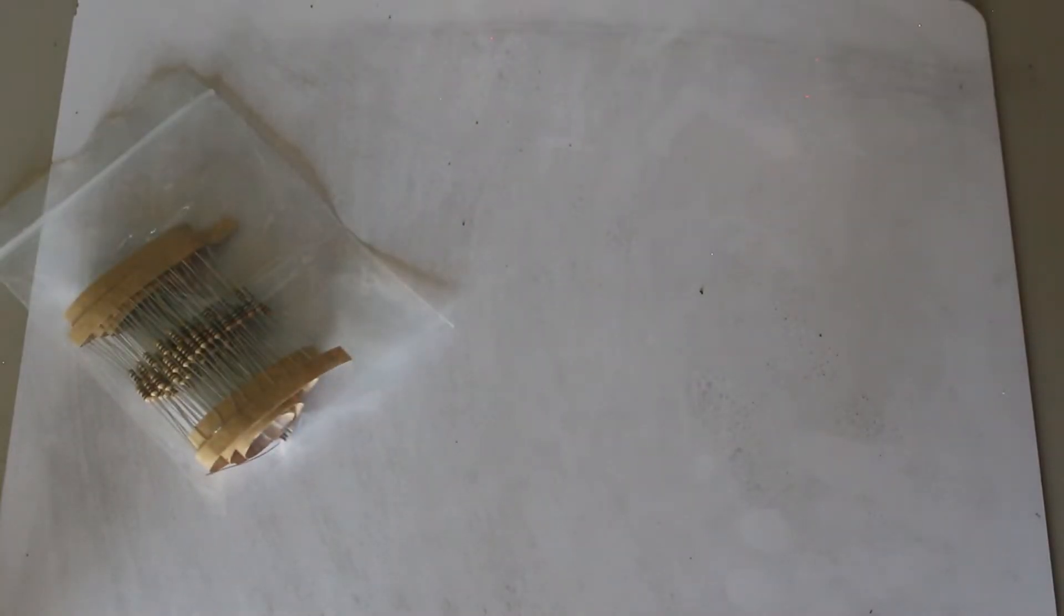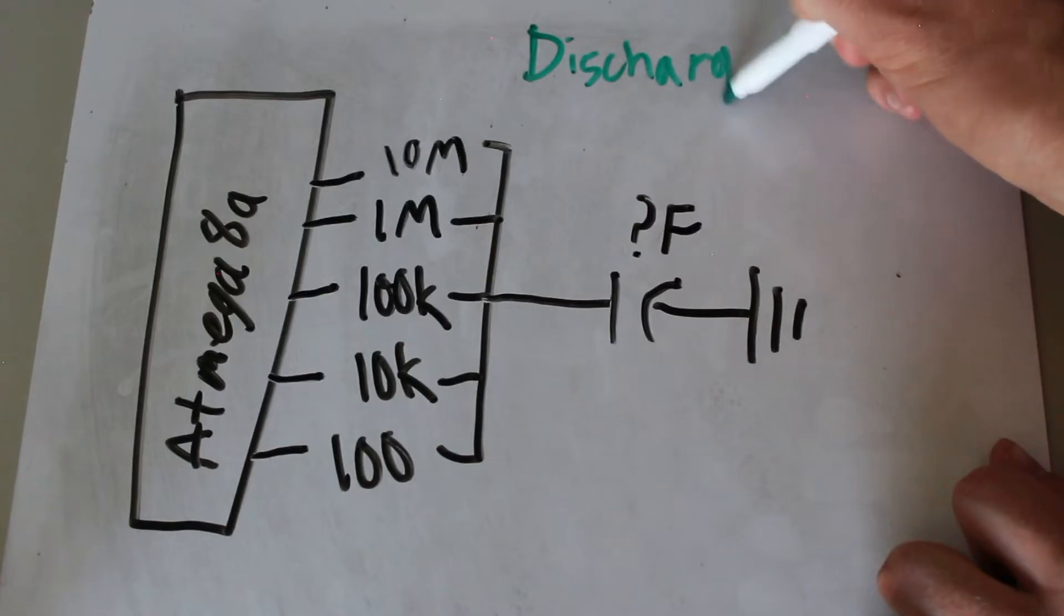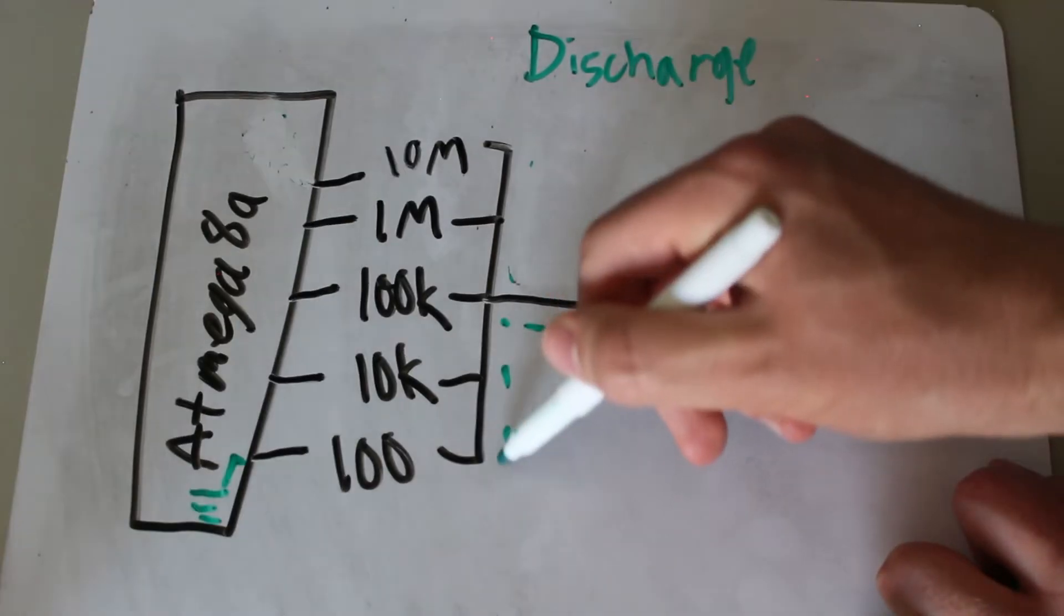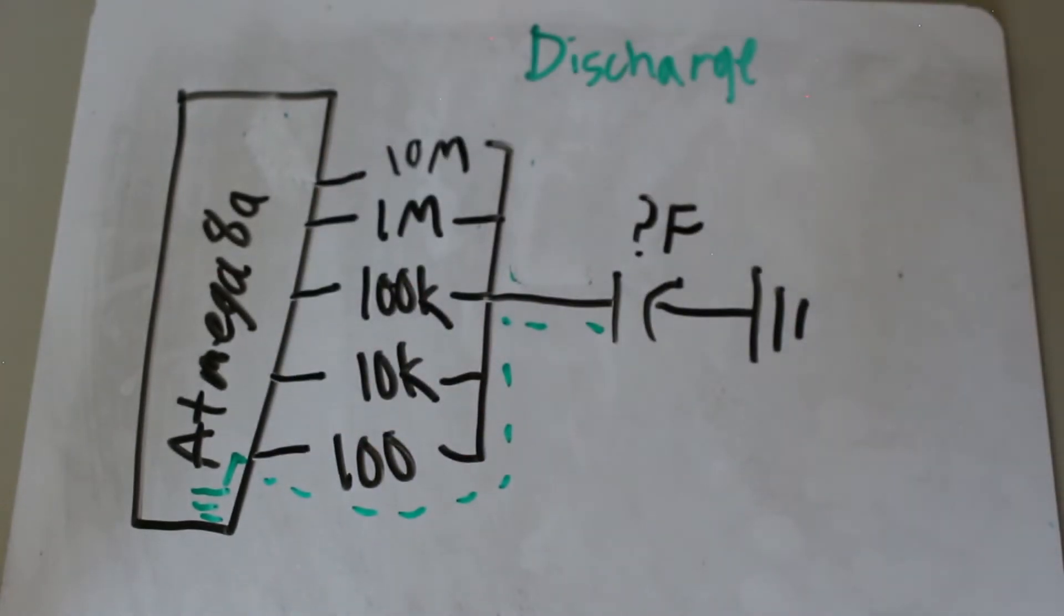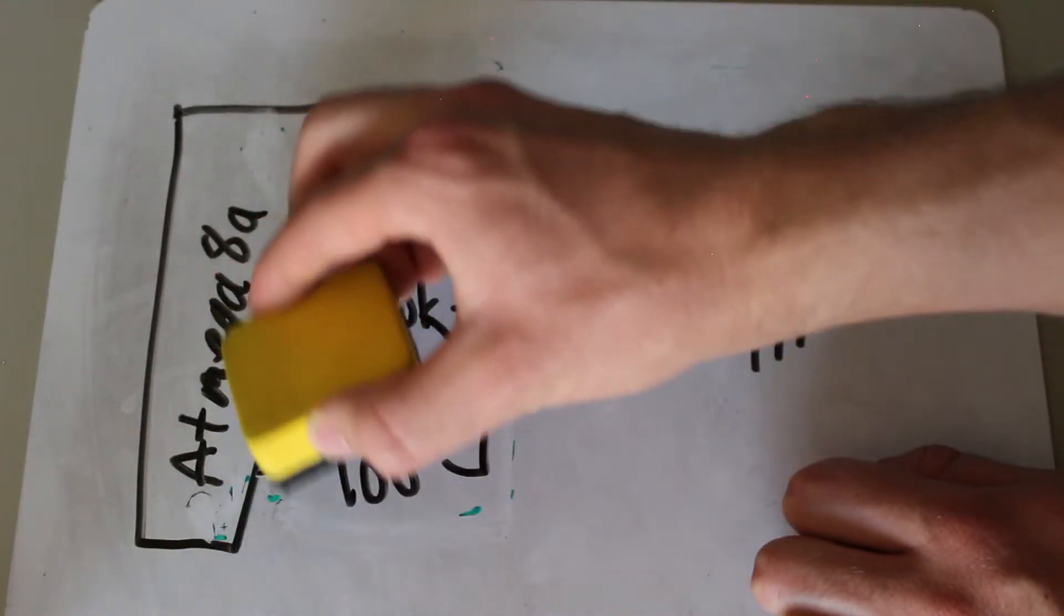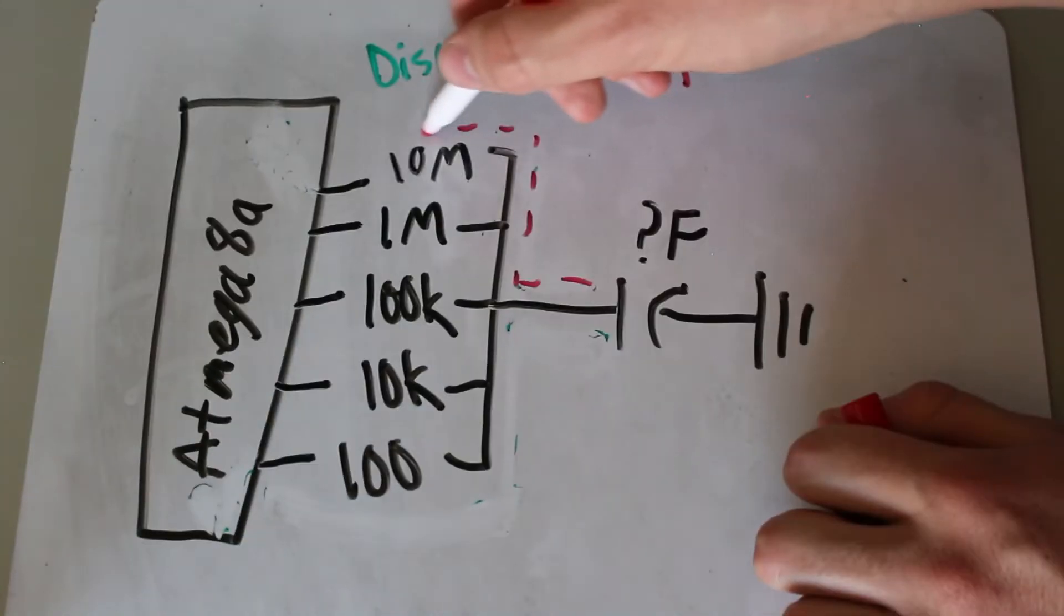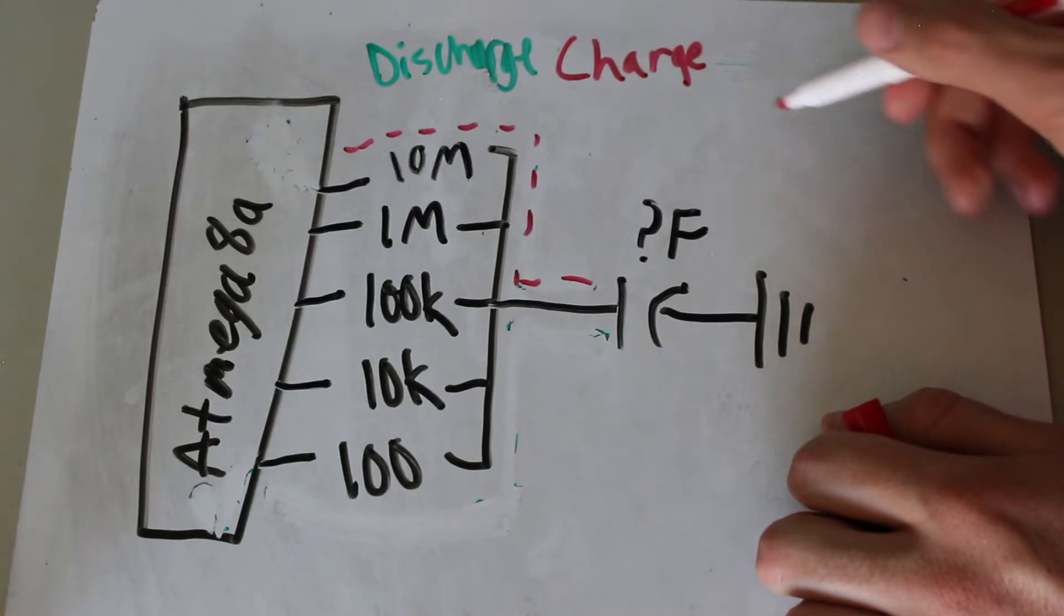Now that we have the resistor part out of the way, we can determine how the program should work. First, the microcontroller will discharge the capacitor quickly by outputting the 100 ohm resistor to ground. Then, once the capacitor is at zero potential, we can deactivate the connection to ground and output a high level on the largest resistor. If it takes too long, say half a second, then we move on to the next resistor.